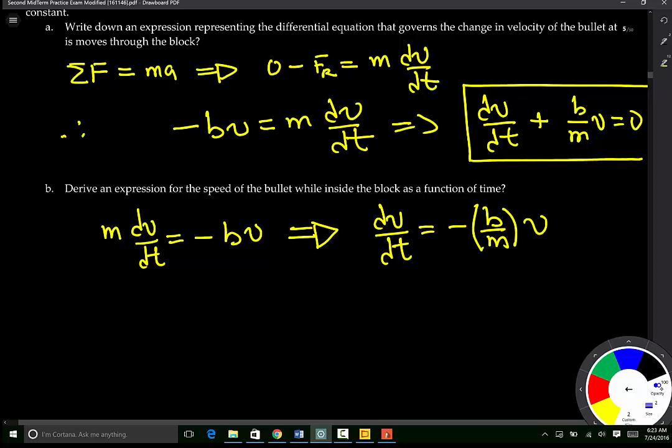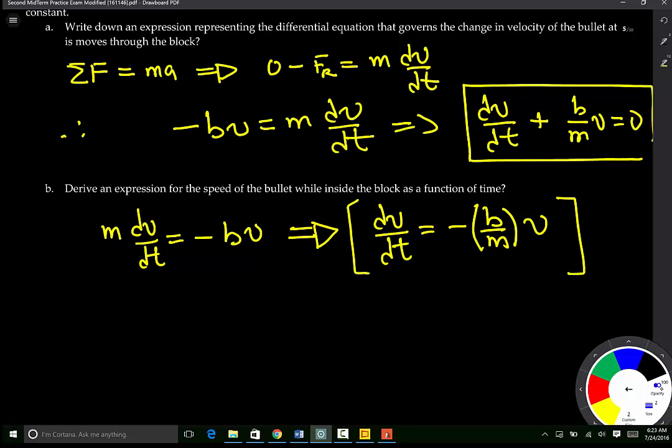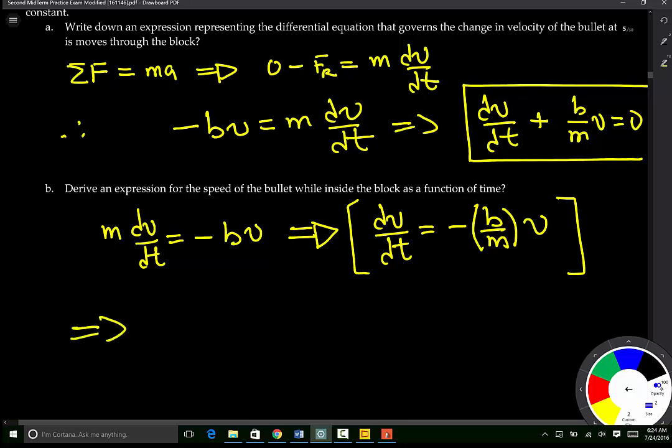So, how do we solve this differential equation? To solve this differential equation, we need to separate the variables. We are going to take all the terms that contain v to one side of the equation and the terms that contain t to the other side of the equation. This means that you will end up with dv divided by v equal to negative B over M multiplied by dt.